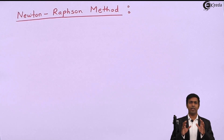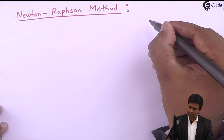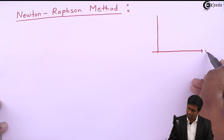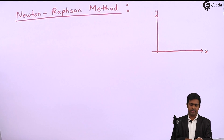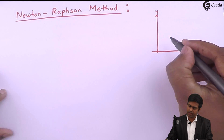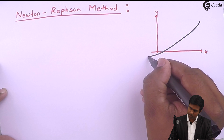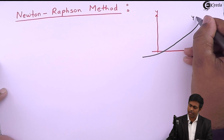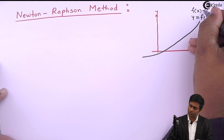What is the geometric meaning of it? Let's understand it first. Let's say this is the x and y axis and we have a curve. The equation of this curve is y equal to f of x, or we will say that f of x is equal to 0.